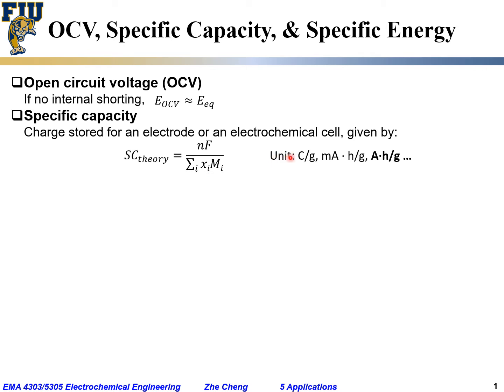And it would have the unit of coulomb per gram, or sometimes people use milliamp hour per gram or amp hour per gram. Remember, 1 amp hour would be 1 amp times 3600 seconds, which is 3600 coulomb.